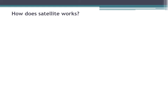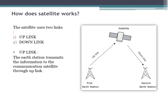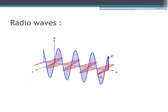How does a satellite work? It mainly uses two links: uplink and downlink. Uplink is the connection through which the earth station transmits information or electromagnetic waves to the communication satellite. Downlink is the connection through which the earth station receives electromagnetic waves or information from the communication satellite. The uplink frequency should always be higher than the downlink frequency in order to avoid noise interference and collision. Radio waves are used as a medium between the earth station and the communication satellite.